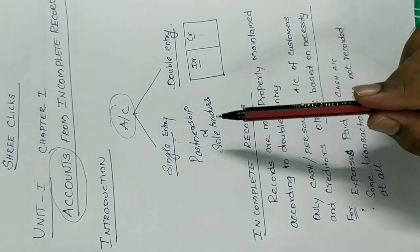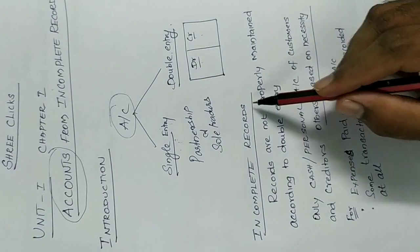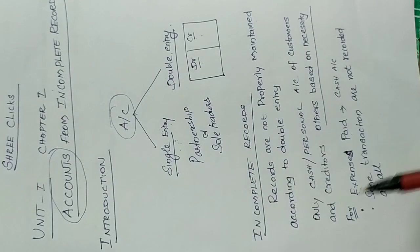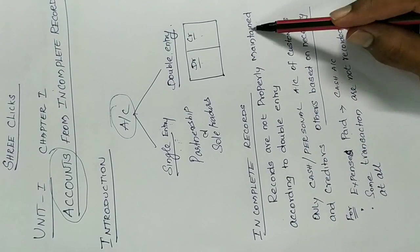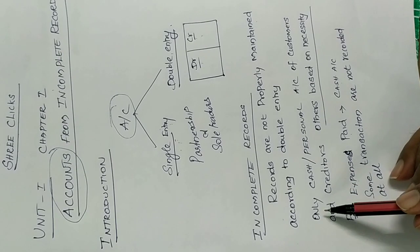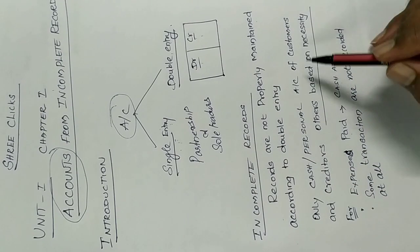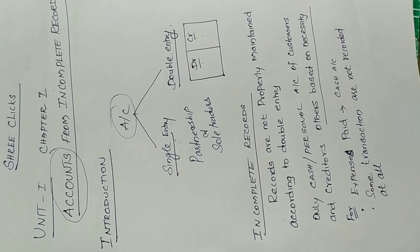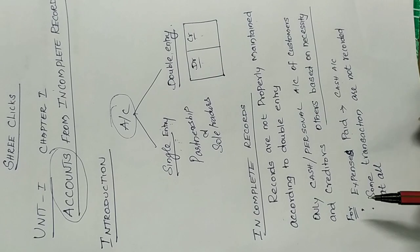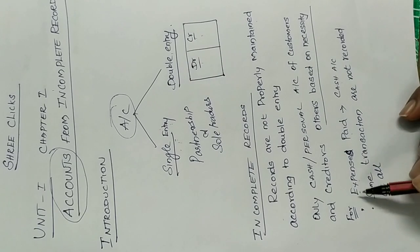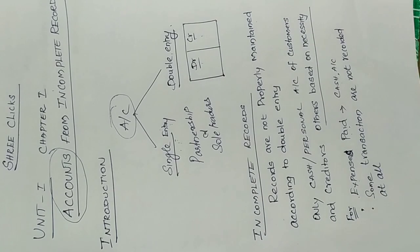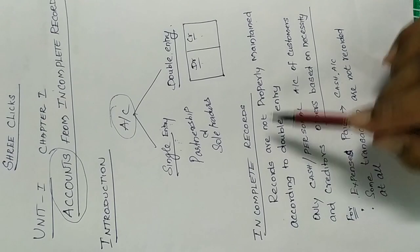What is single entry? What is incomplete records? In incomplete records, records are not properly maintained — every debit does not have a respective credit. Only cash and personal accounts of customers and creditors are maintained. Some transactions are only partially recorded, and some transactions are not recorded at all. That's why it is called incomplete records.